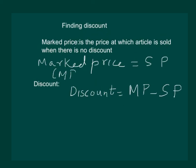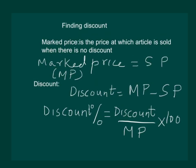Mark price can be denoted by MP. It is worth noticing that sometimes discount will be given in the question in terms of discount percent. In that case also we can calculate discount, and it is important to note that discount is always calculated on marked price. The formula for discount percent is discount in rupees over mark price, multiplied by 100. If we are given the discount percent, we can calculate the discount by cross multiplying using this formula.